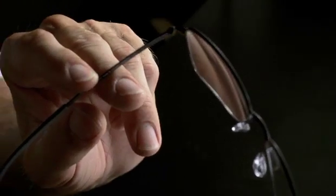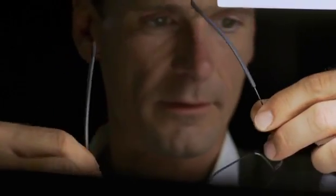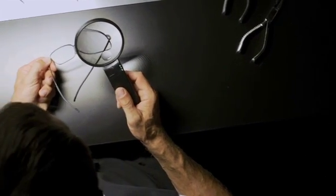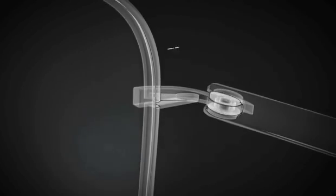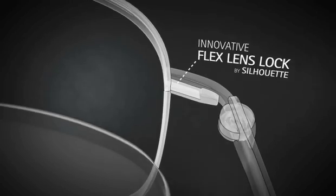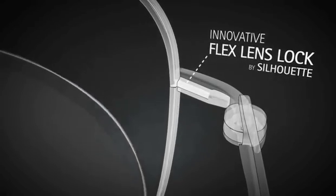For a long time, it was unthinkable that full-rim eyewear could be made without screws. With our eyewear, we showed the world the truth. With the FlexLens lock system, the innovation of the hour, it is possible for lenses to be clipped into the metal rim in the blink of an eye.